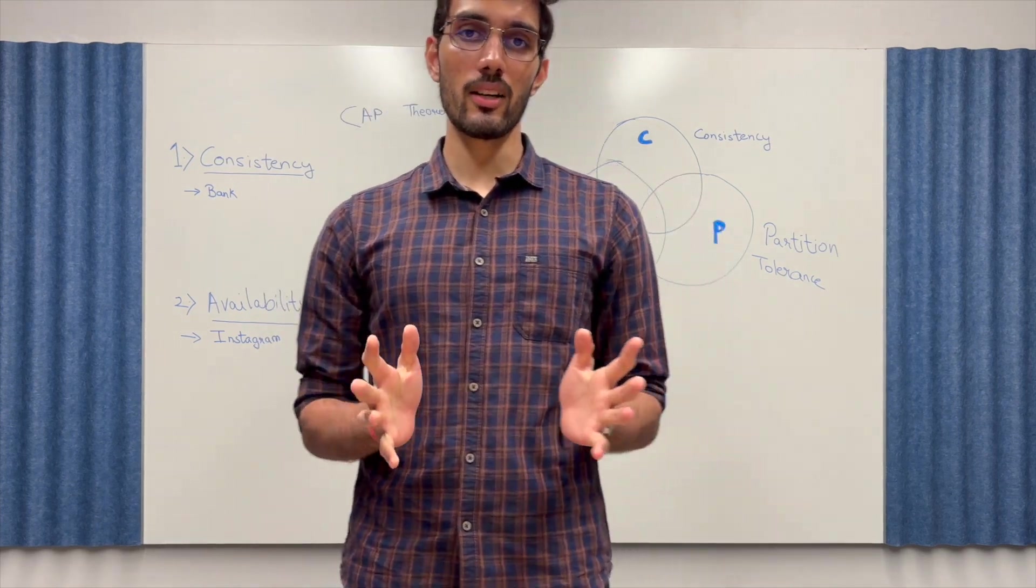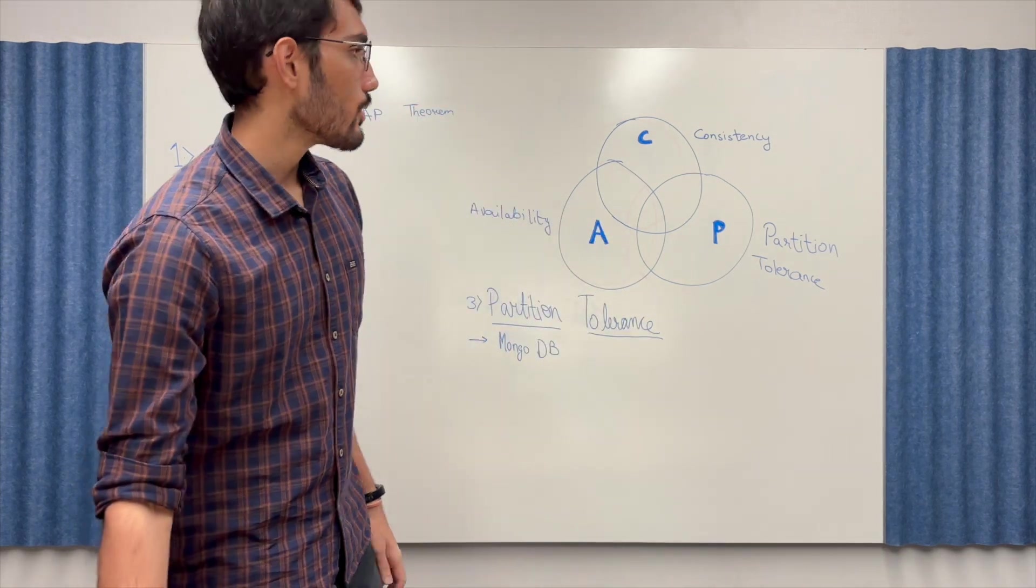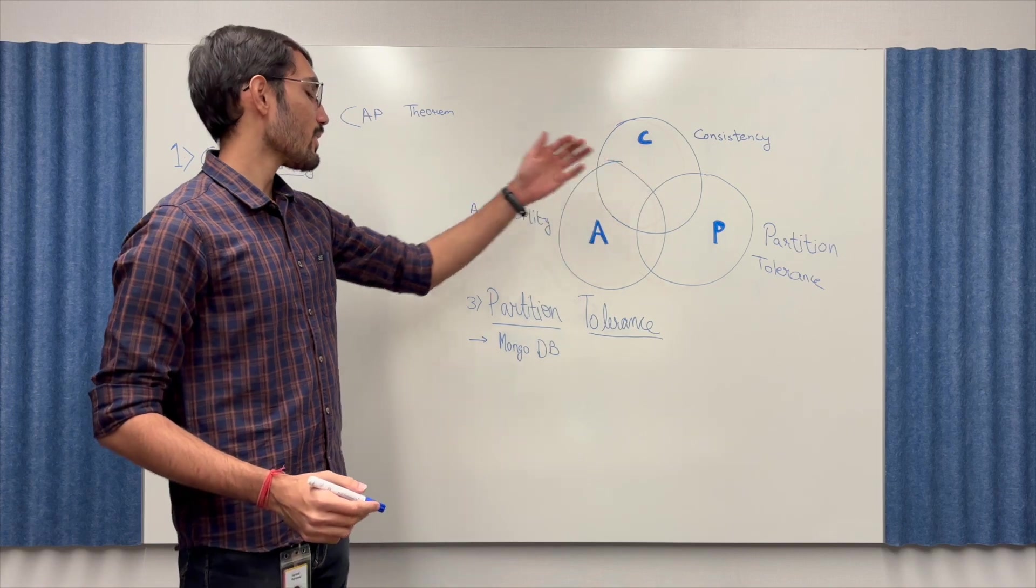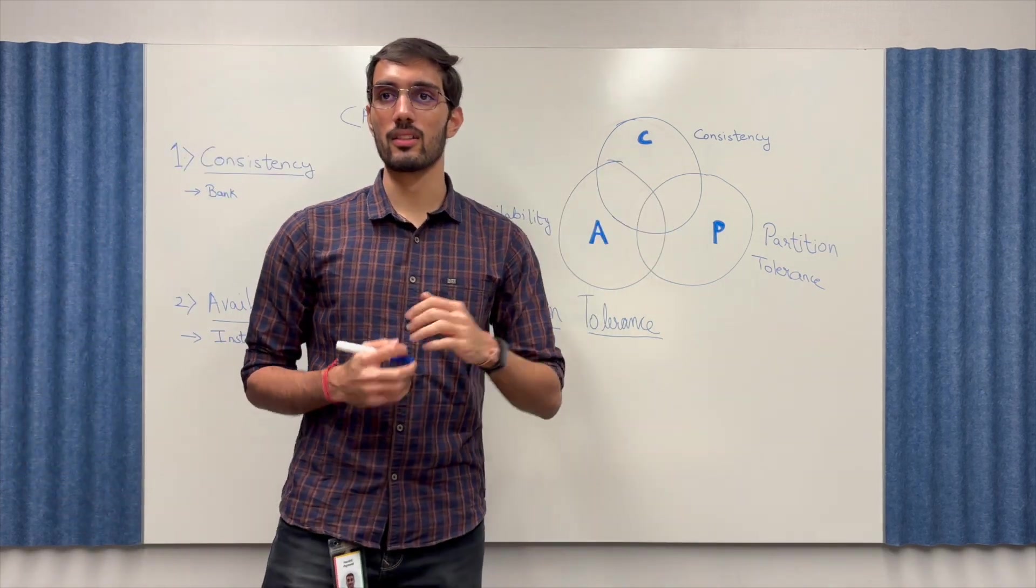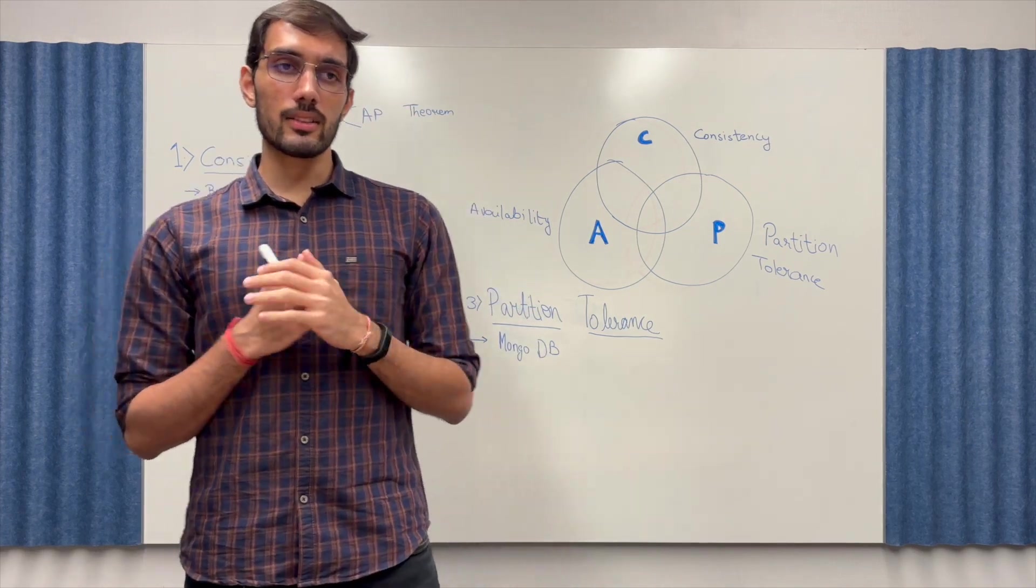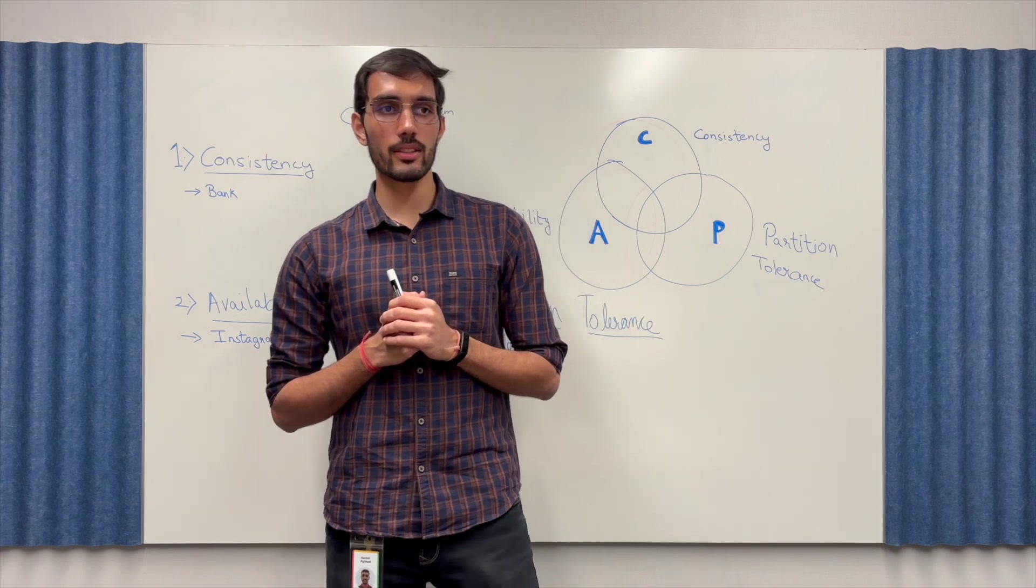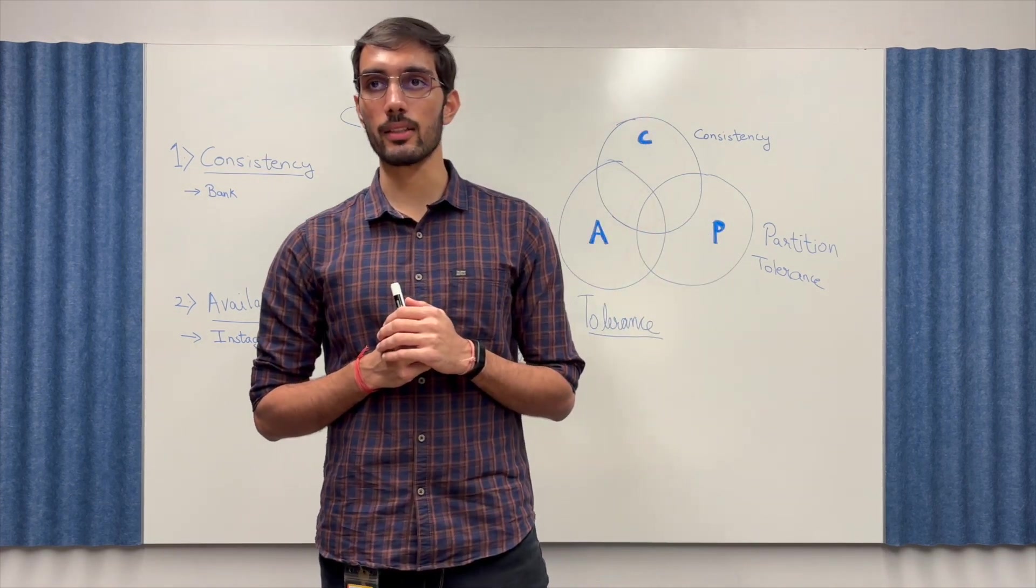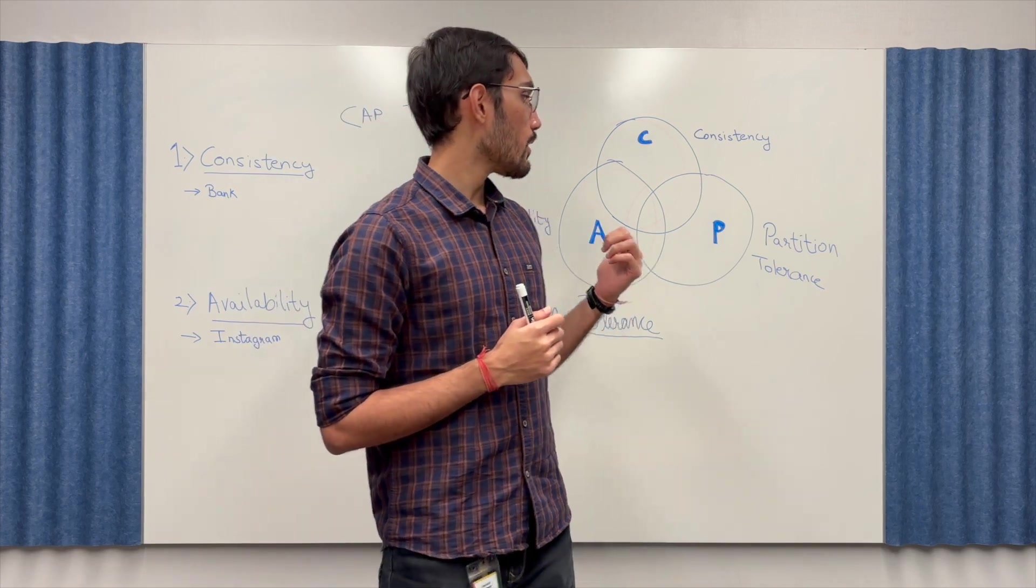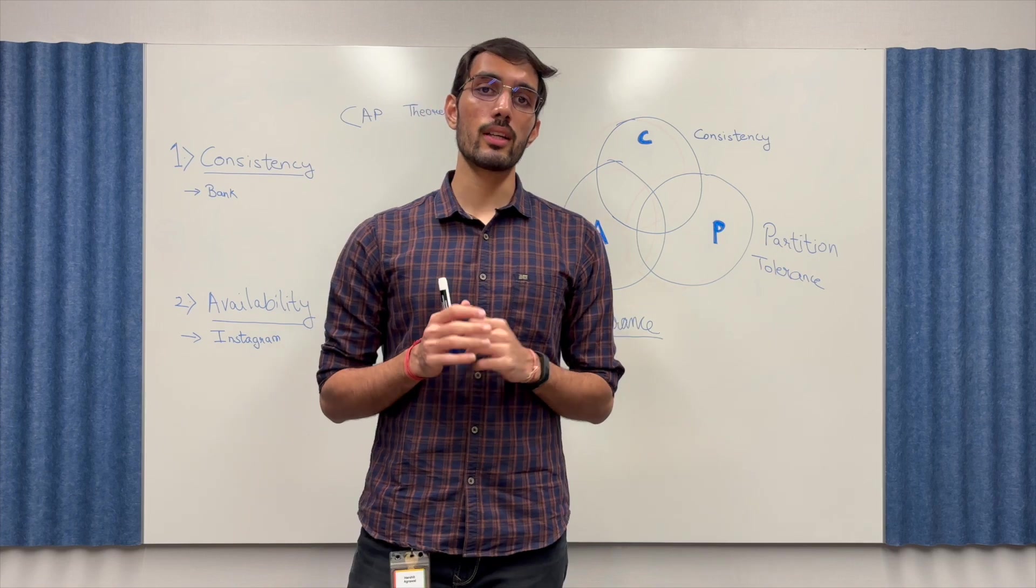Now you must be wondering what C, A, P individually mean. So C means consistency, A means availability and P means partition tolerance. Now I'll state the CAP theorem. The CAP theorem states that in a distributed system you can only guarantee two out of the three key properties which are consistency, availability and partition tolerance. So let's break down what each of these mean.